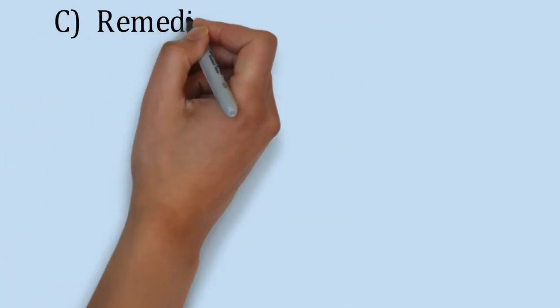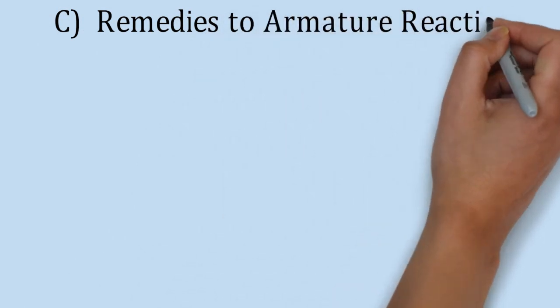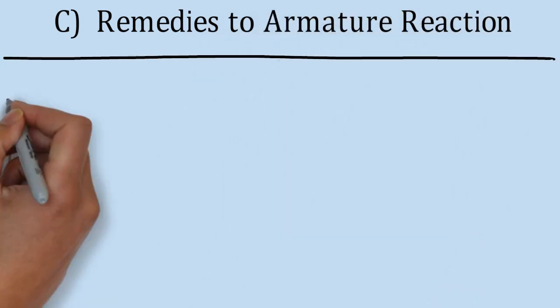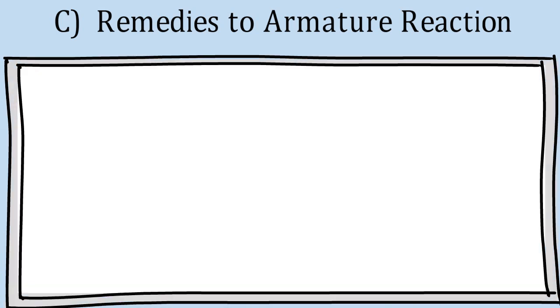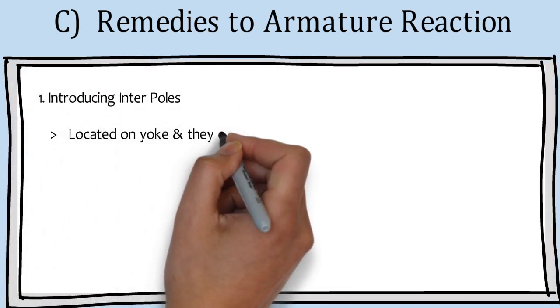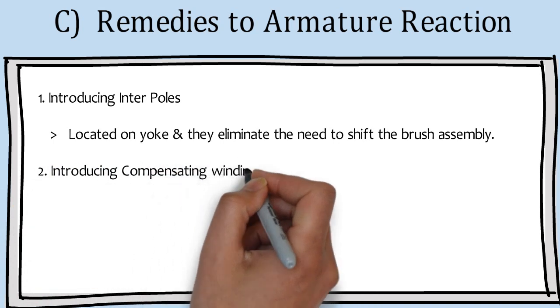Here, we will see remedies to armature reaction. To reduce the effect, firstly, we can introduce interpoles in yoke. It will eliminate the shifting of brush.